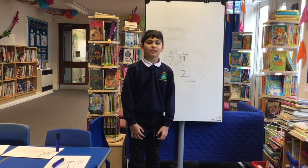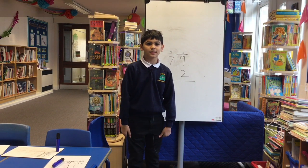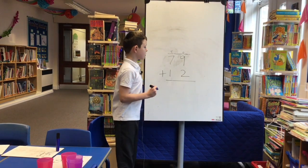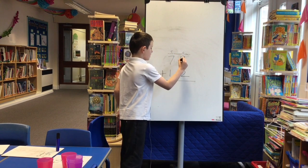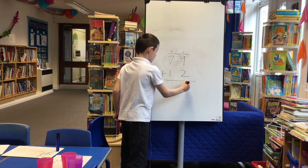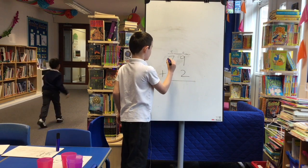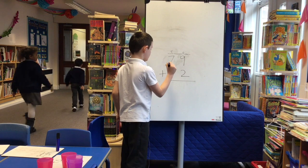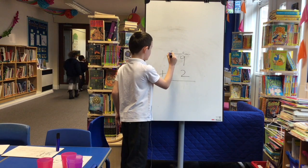When we exchange we swap. Let's do this calculation. Nine add two equals eleven. So you exchange the one for there and then you exchange the ten to put it there.